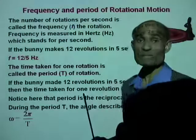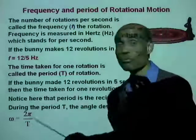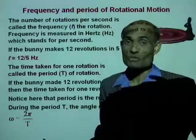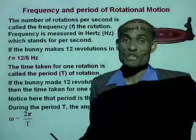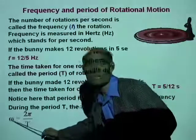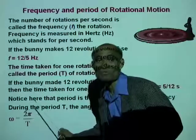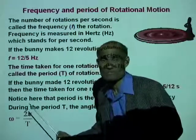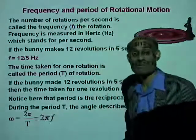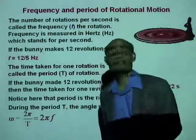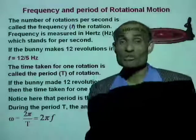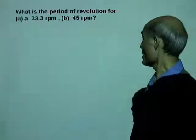That is a very important relation — we discussed it in circular motion. Omega equals 2 pi divided by the period, which is the same as 2 pi multiplied by the frequency.